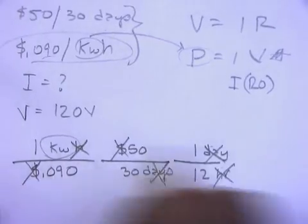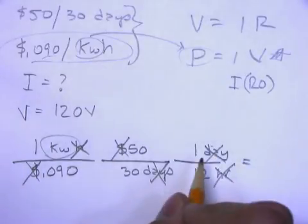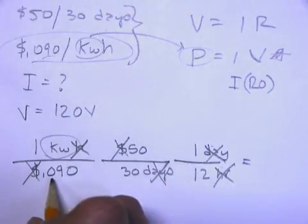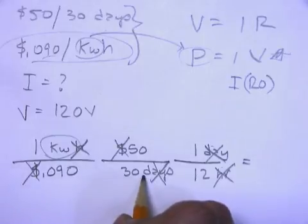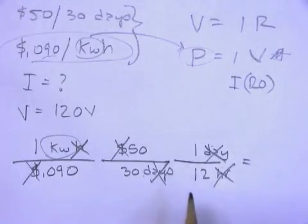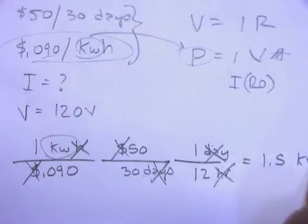So I can multiply everything on the top, divide by everything on the bottom, and I get 1 times 50 times 1, which is 50. I'm going to divide that by 0.09, and I'll divide that also by 30, and I'll also divide that by 12. So that gives me 1.5 kilowatts.